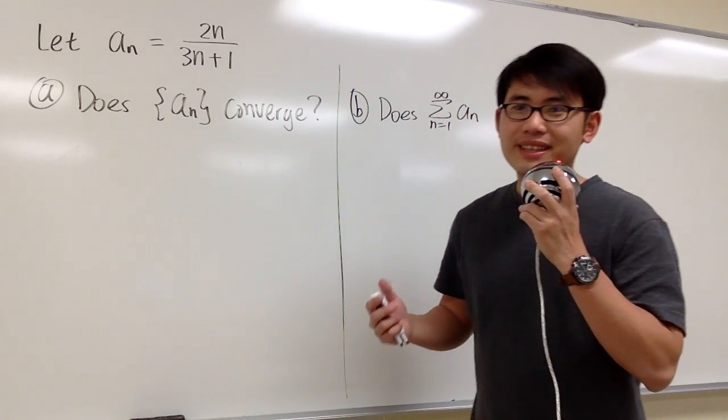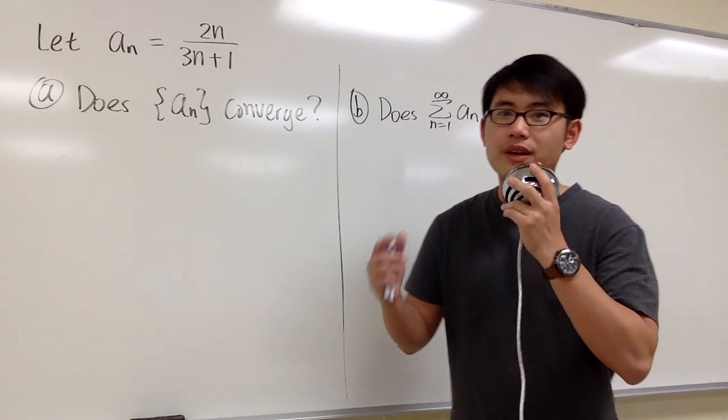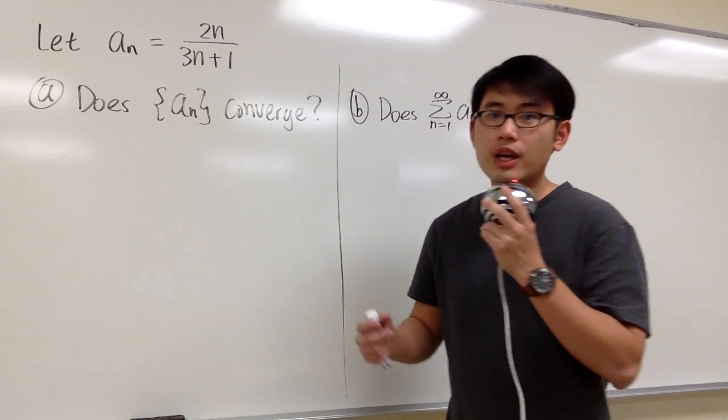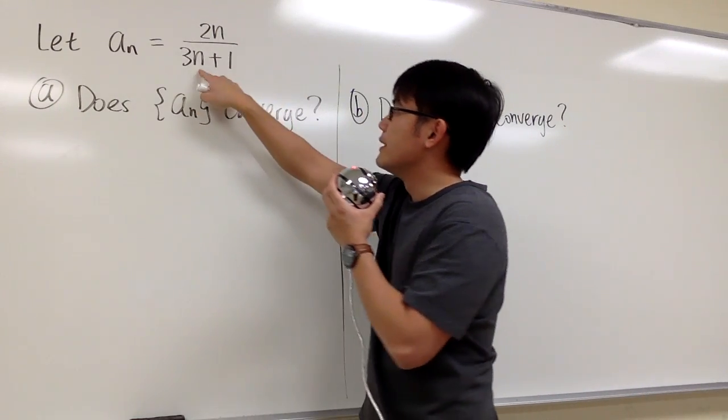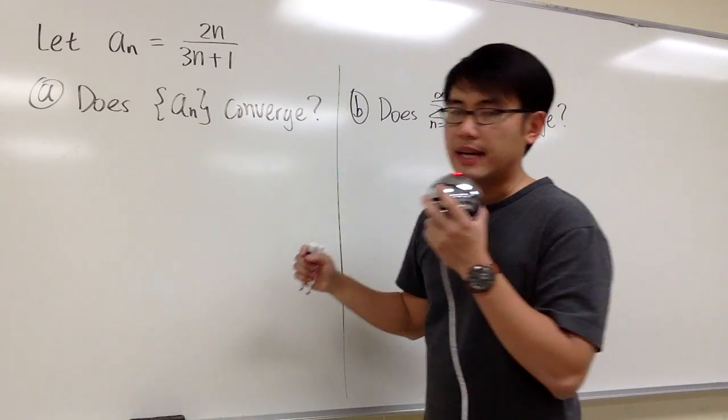This question is super important because it's testing us about the difference of a sequence versus a series. We are given that a_n is equal to 2n over 3n plus 1, and the first part is asking us,